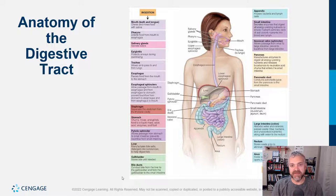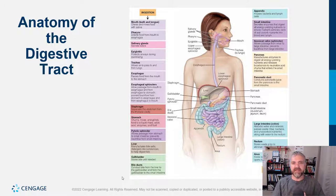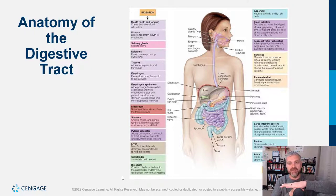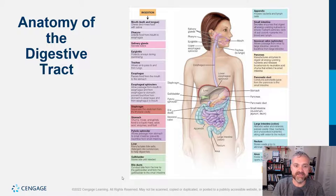When you swallow, food travels through your pharynx — your throat — and then down the esophagus into the stomach. The epiglottis plays an important role: the trachea is your airway carrying air from the throat to the lungs. When you swallow, the epiglottis covers the trachea so that food doesn't go to the lungs and instead travels down the esophagus. The opening of the trachea is called the glottis; the epiglottis covers it during swallowing.